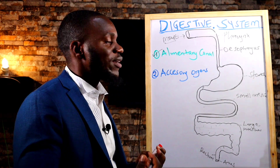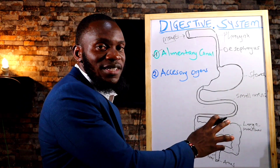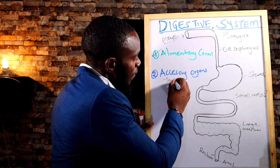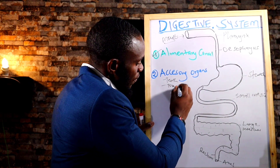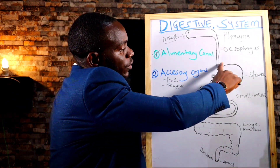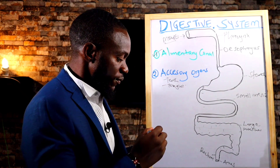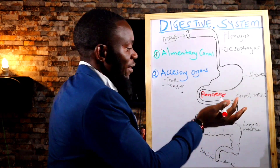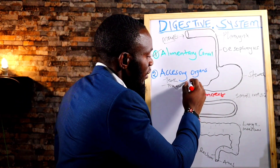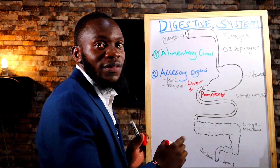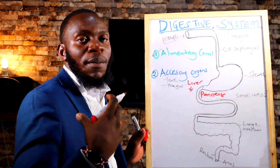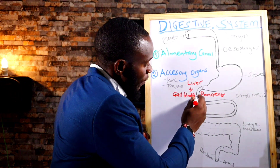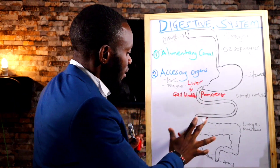The accessory organs are other organs involved in digestion but not part of the alimentary canal. Starting from the mouth, we have the teeth and the tongue. Going deeper, we have the pancreas on one side and the liver on the other side. Below the liver, we have something called the gallbladder, which houses bile acids that help you absorb fat. Those are the organs involved in this system.